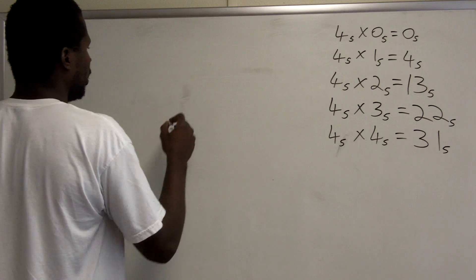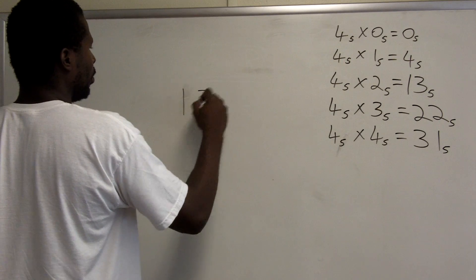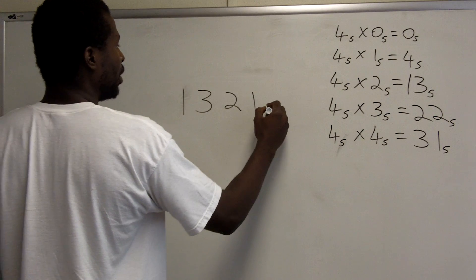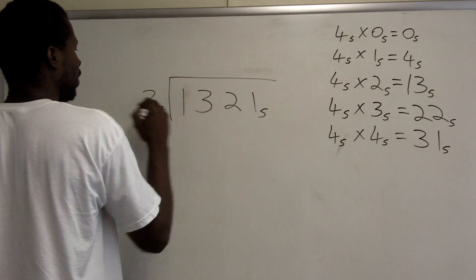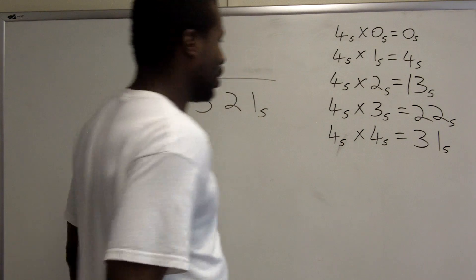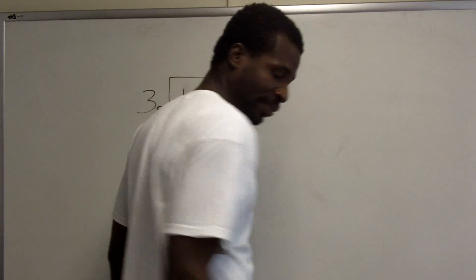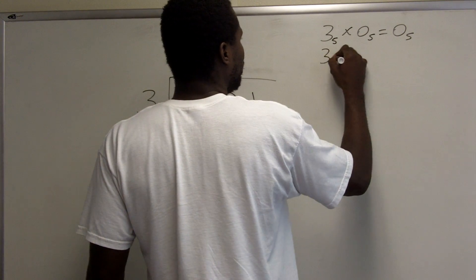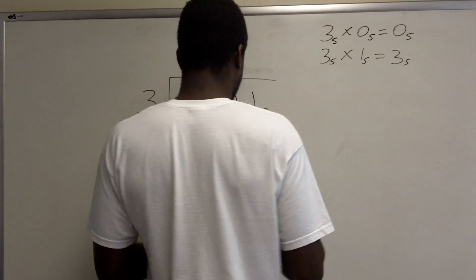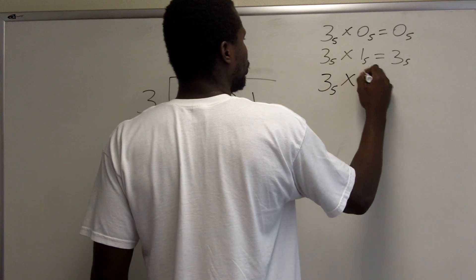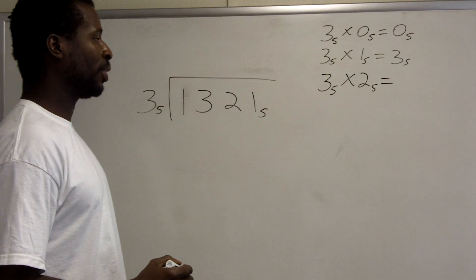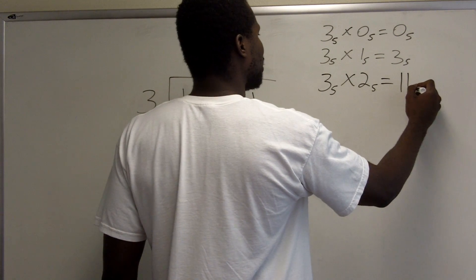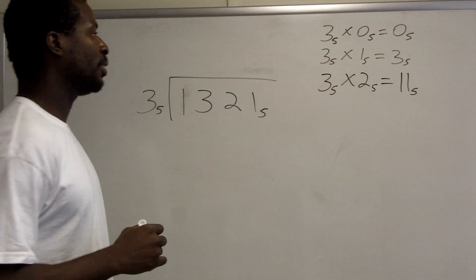Let's try 1,321 base 5 divided by 3 base 5. Since I'm dividing by 3 base 5, I'll make a new list for the 3 times tables in base 5. 3 base 5 times 0 is 0. 3 base 5 times 1 is 3. 3 base 5 times 2: that's 6 in base 10. There is 1 group of 5 in 6 with remainder 1, so 6 base 10 is actually 11 base 5.